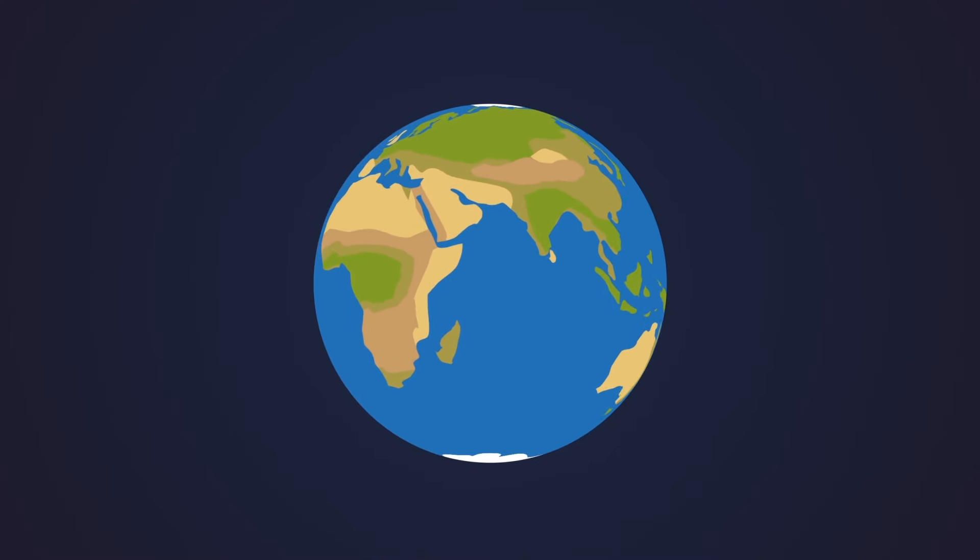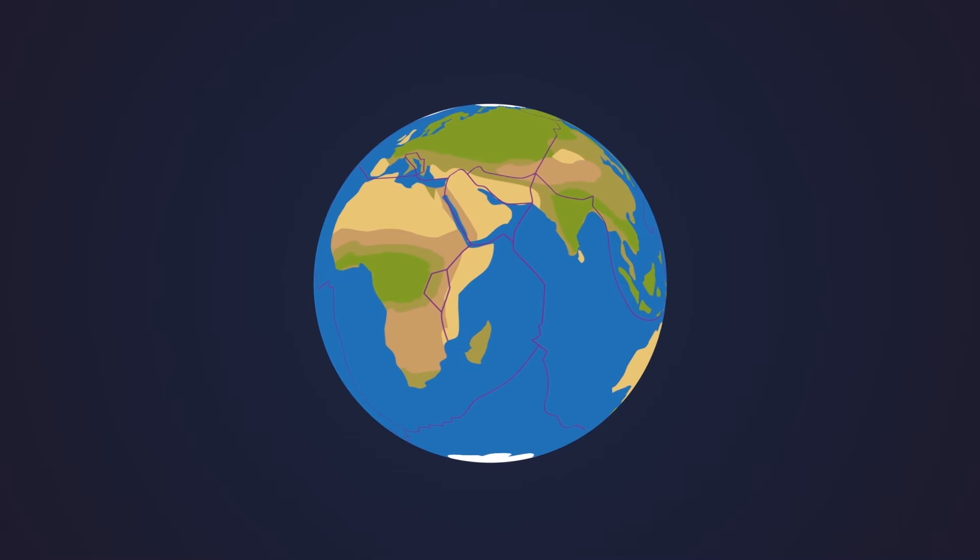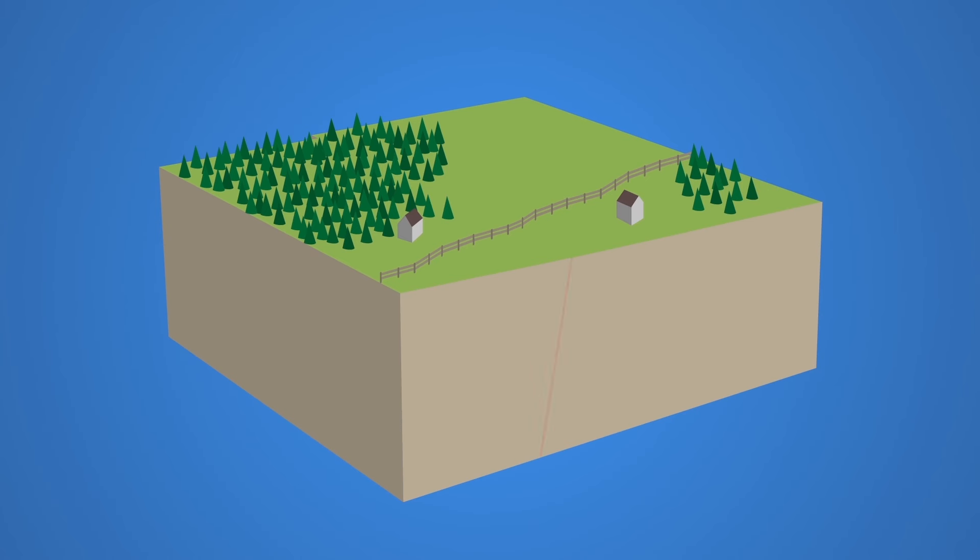The crust is made of huge, slowly moving pieces of rock called tectonic plates. When they slide in opposite directions they can get tangled up. This puts a gigantic amount of strain on the rock.